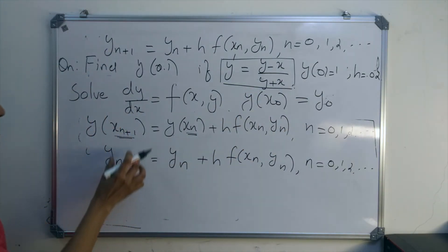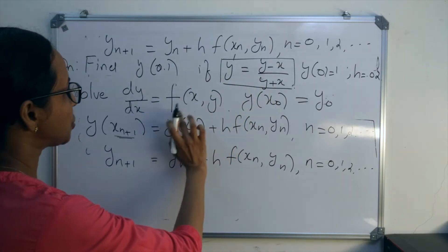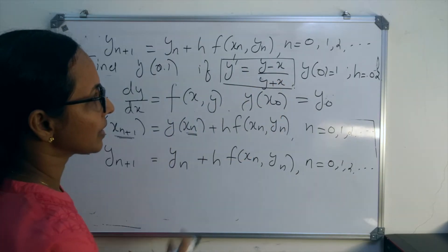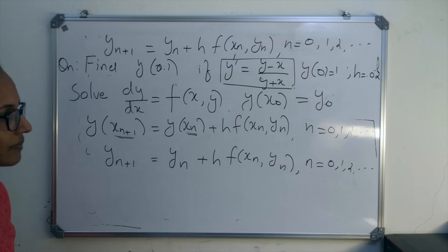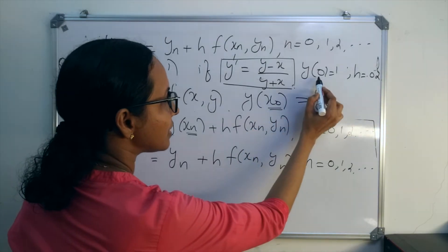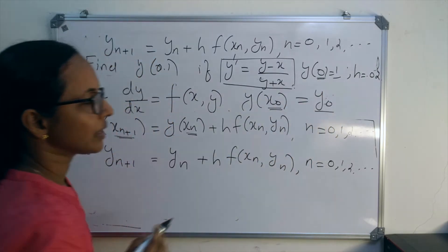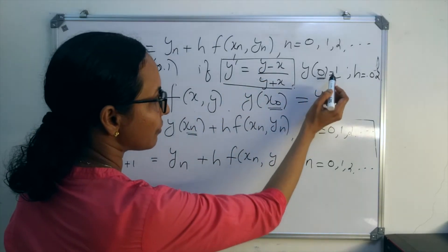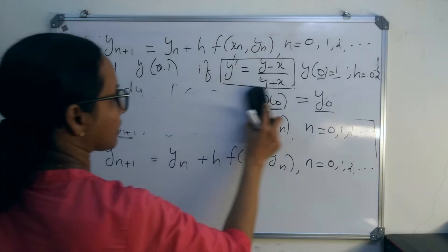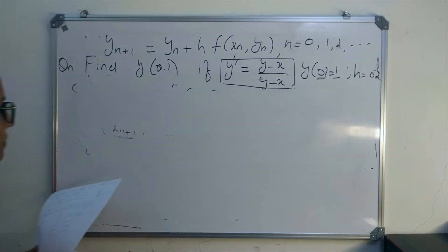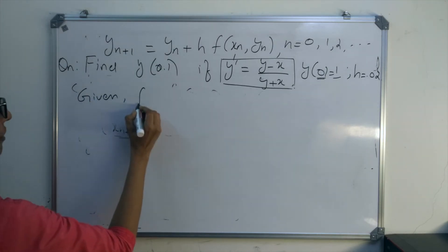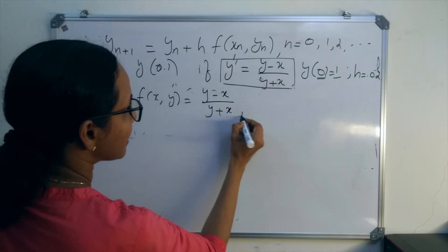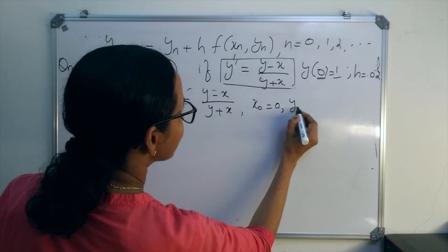We need the solution of this differential equation at x = 0.1. Comparing with the general form dy/dx = f(x, y), we identify f(x, y) = (y − x)/(y + x). The initial conditions are x₀ = 0 and y₀ = 1.